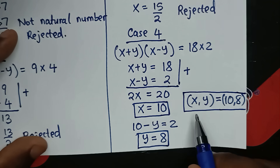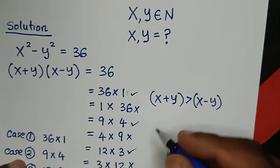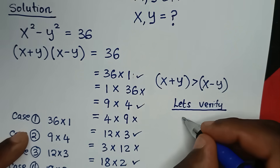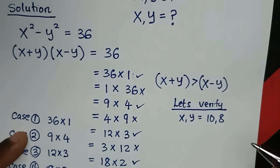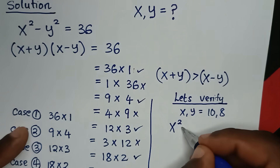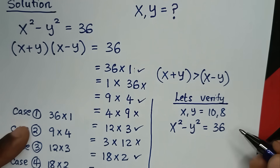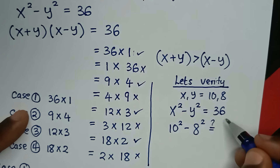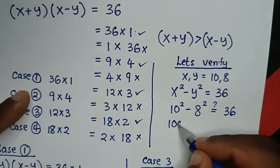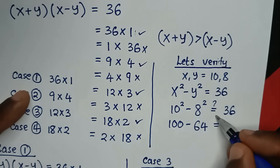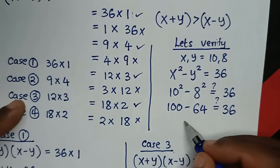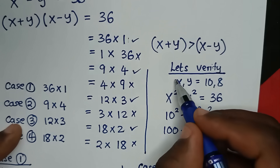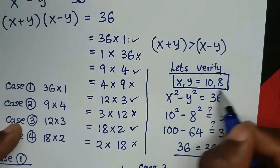Let's verify this solution for x equals 10, y equals 8. From our problem, x squared minus y squared equals 36. Substituting: 10 squared minus 8 squared equals 100 minus 64 equals 36. The left side and right side are equal, so it is confirmed that x, y equals 10, 8, which are natural numbers.